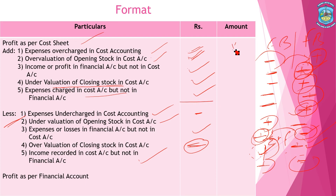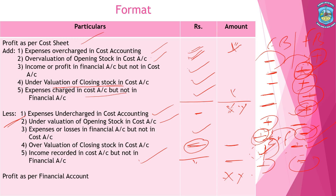So the sum of all the added items is applied to the profit as per cost book, and the sum of all deducted items is subtracted. Whatever balance we get will be the profit as per the financial book. If we start with profit as per the cost sheet, the answer will be profit as per the financial account. This is the format for solving the reconciliation statement.